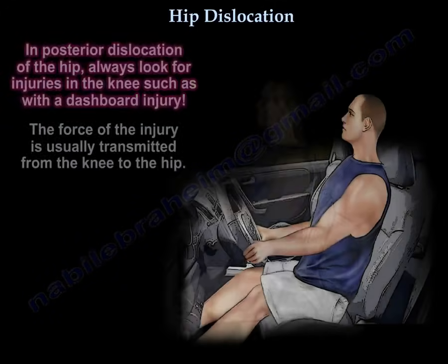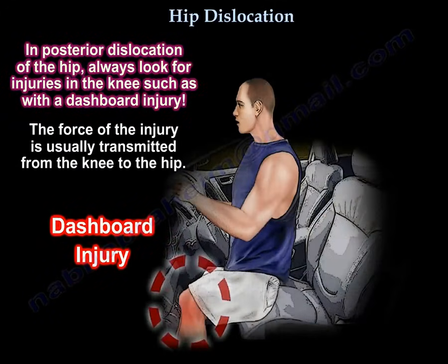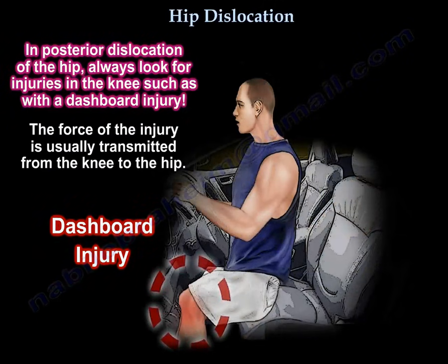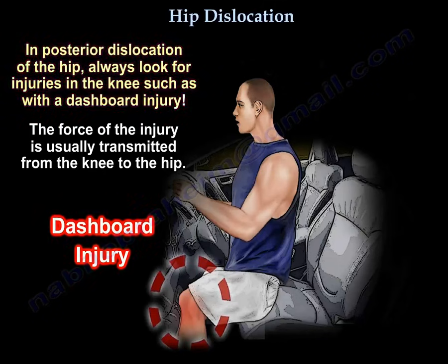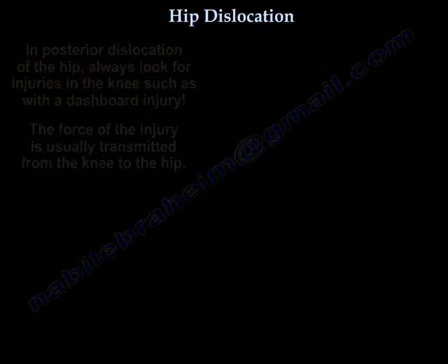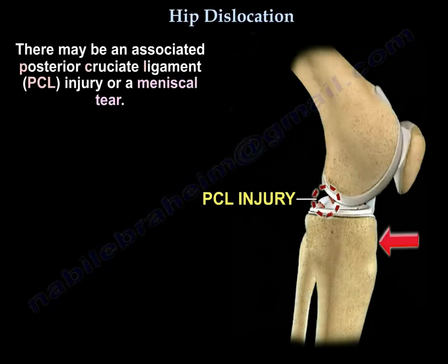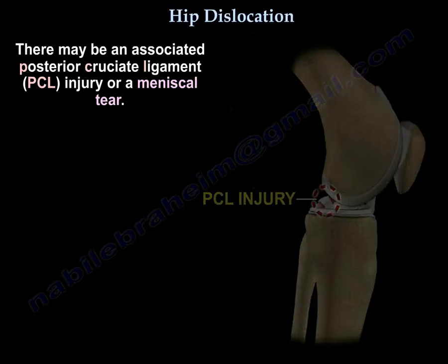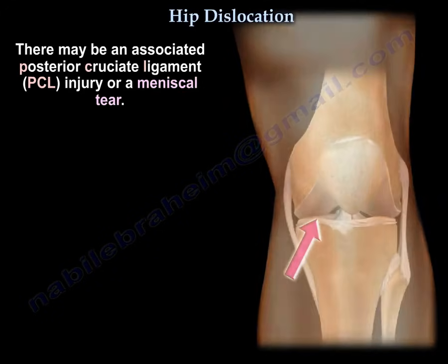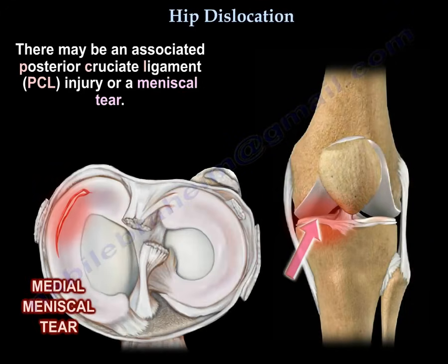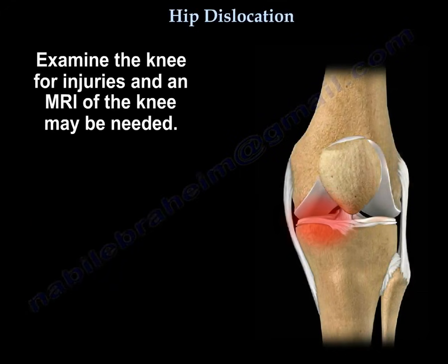In posterior dislocation of the hip, always look for injuries in the knee, such as with a dashboard injury. The force of the injury is usually transmitted from the knee to the hip. There may be an associated posterior cruciate ligament injury or a meniscal tear. Examine the knee for injuries and you may need to get an MRI.